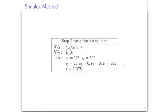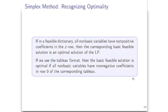Let's formalize the optimality test. In a feasible dictionary, if all non-basic variables have non-positive coefficients in row 0, then the corresponding basic feasible solution is an optimal solution of the LP. In the table format it's the opposite: the basic feasible solution is optimal if all non-basic variables have non-negative coefficients in row 0 of the corresponding table. Remember the change in sign of coefficients between dictionary format and table format — but essentially it's the same thing.